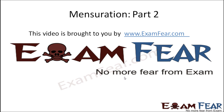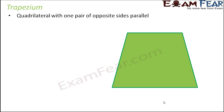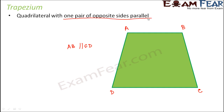This video on mensuration part 2 is brought to you by examfear.com. Let's talk about a trapezium. A trapezium is a quadrilateral with one pair of opposite sides parallel. So if ABCD is a trapezium, AB is parallel to CD, but AB and BC are not parallel — only one pair of opposite sides are parallel.